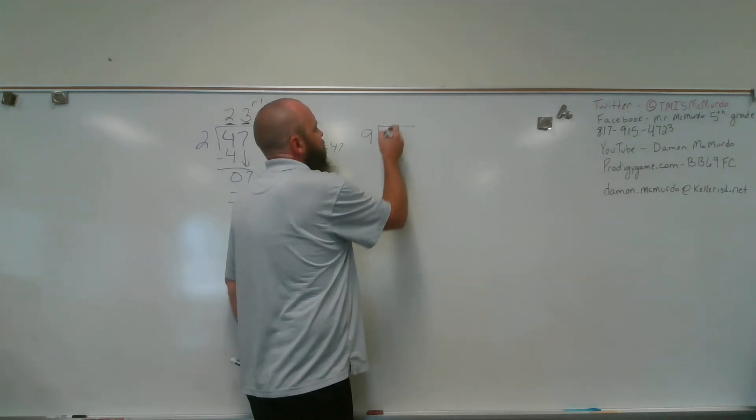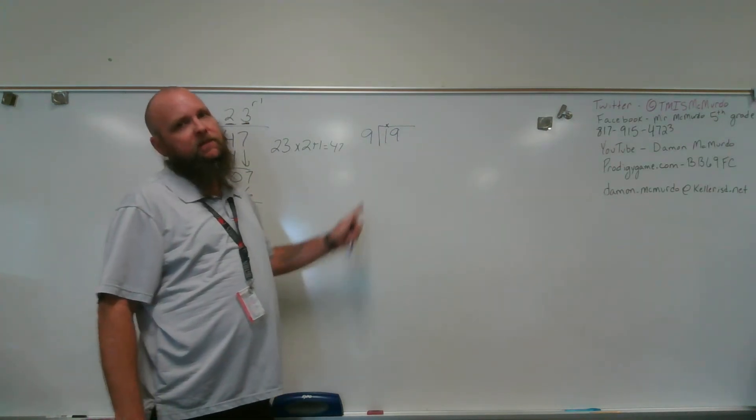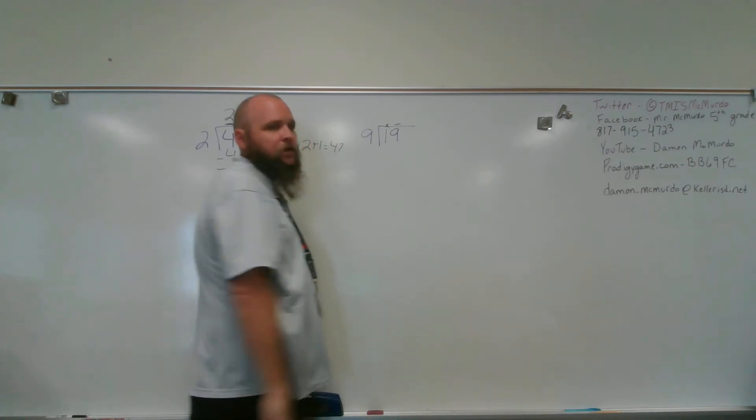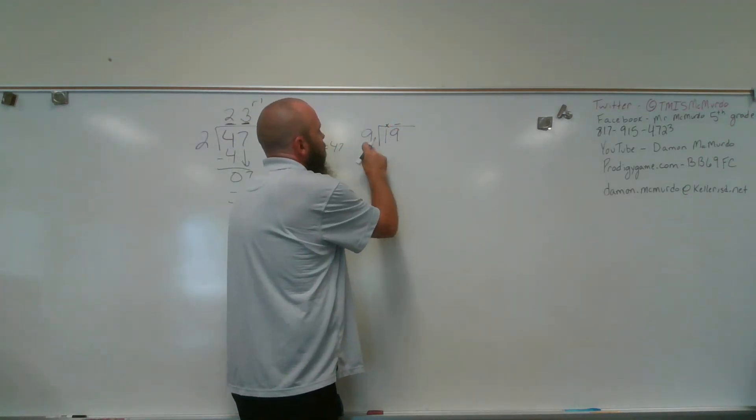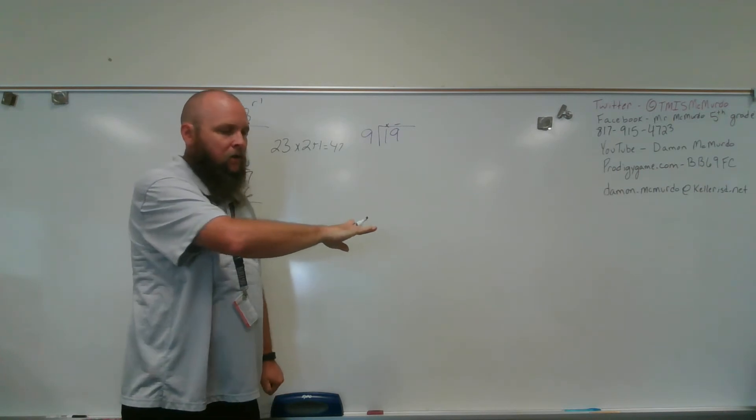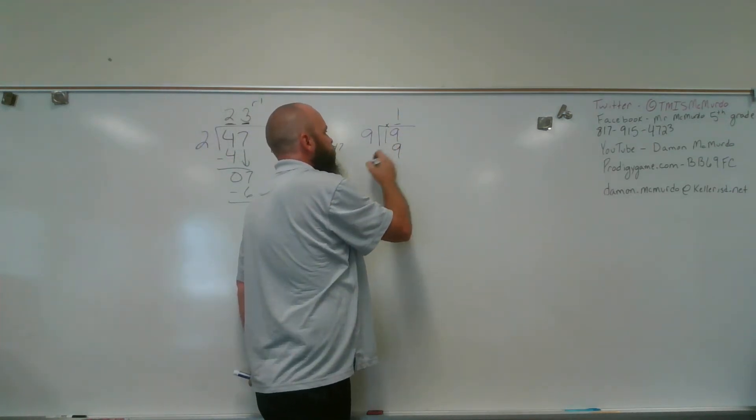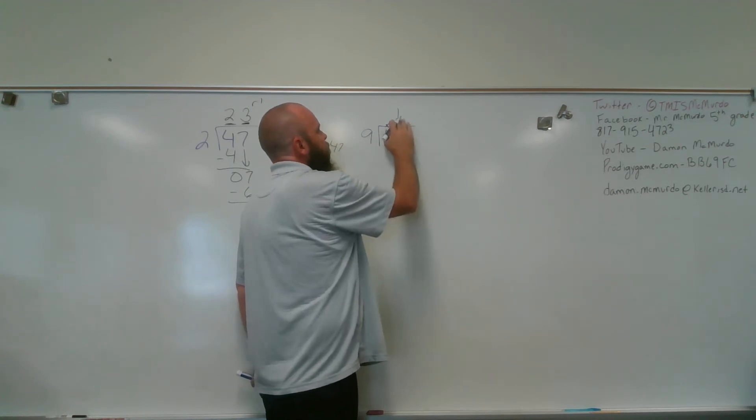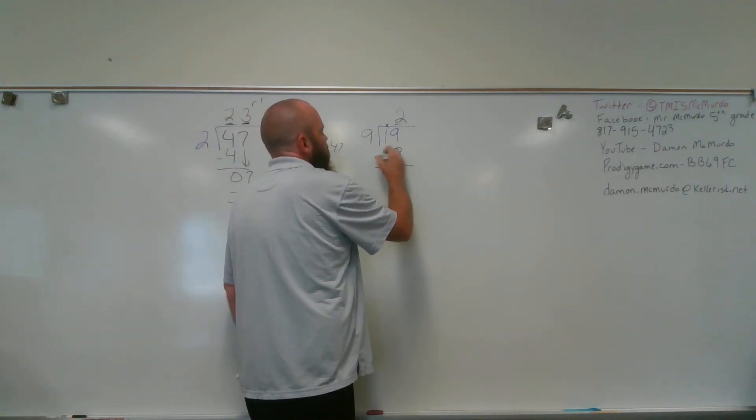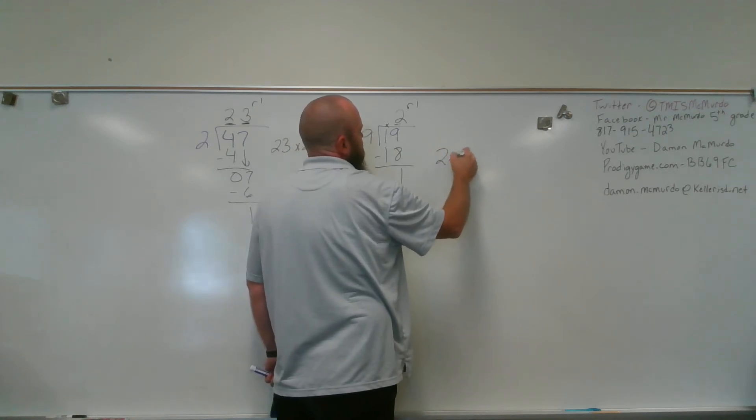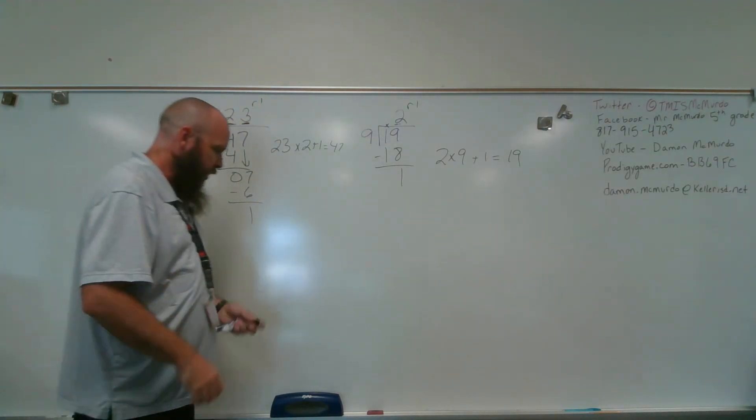All right, 19 divided by 9. 9 does not go into 1. 9 will go into 19 because 19 is greater or equal to 9, but it's actually greater. So I'm going to have a 1-digit quotient. 19, or 9 goes into 19. Use my multiplication chart. Look at my 9 row. 9, 18, oh 18 is not too big. Mr. McMurdo is not paying attention. So 18 is not too big. 18 is just 1 less. That's going to be 18. Subtract, I get 2, remainder 1. So I'd have 2 times 9 plus 1 should equal 19.